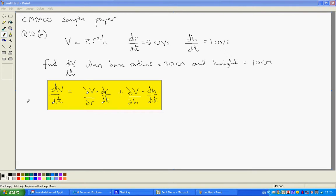This is CM2900 sample paper, question 10, part B. We're given that V equals pi R squared H, that's the volume of a cone.